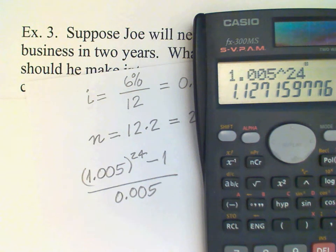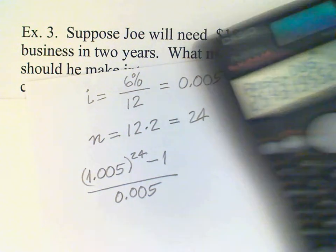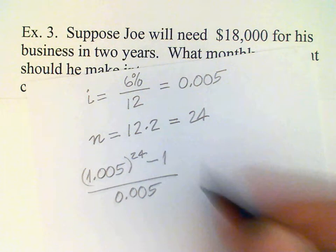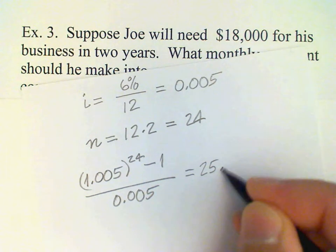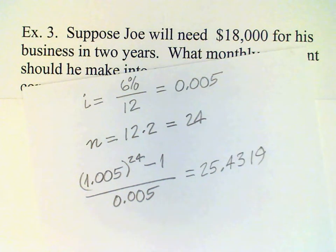I have to subtract 1 from that and then divide the answer by 0.005. And the answer is 25.4319. That's probably enough places for the accuracy that we want.